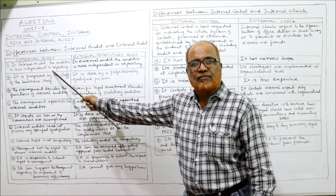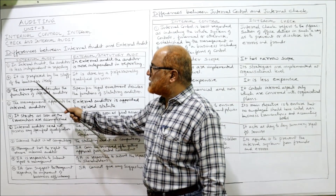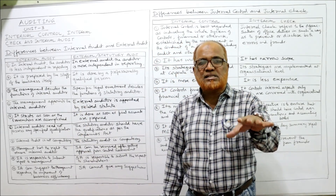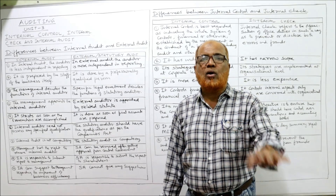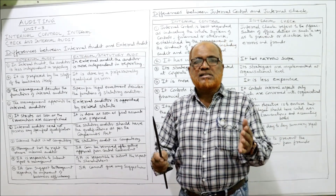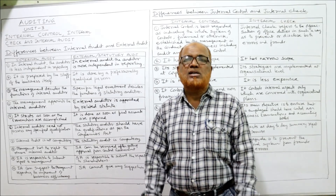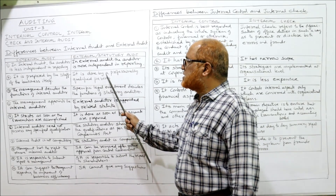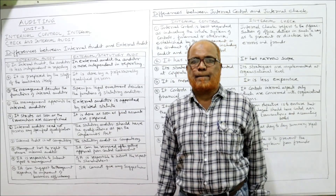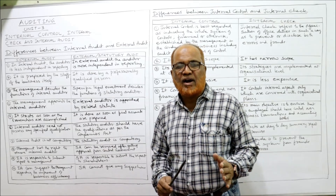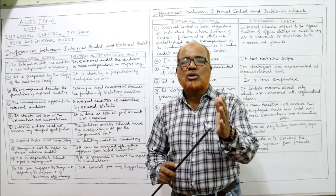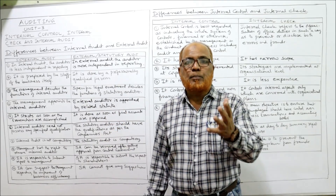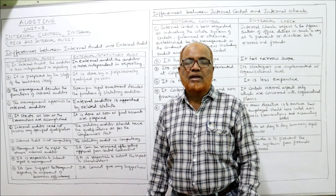Second difference: who conducts the audit. Internal audit is conducted by a staff member — an employee of the organization, not an outsider. Whereas external audit is done by a professionally qualified person. The law specifies the qualifications required for an auditor, and the external auditor must possess that professional qualification as an outsider.